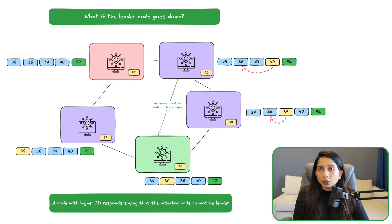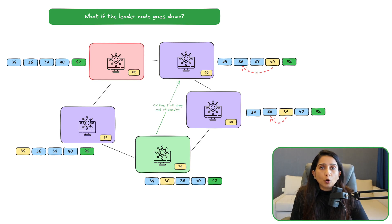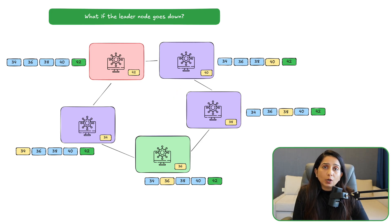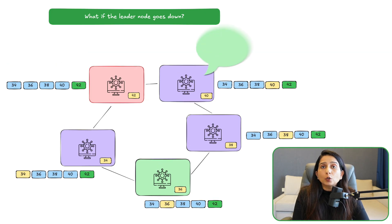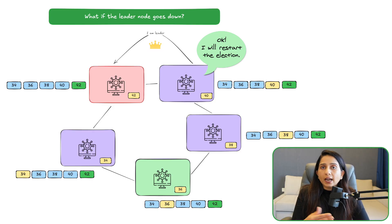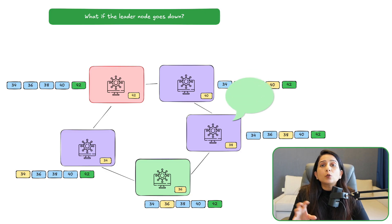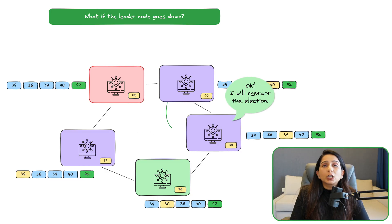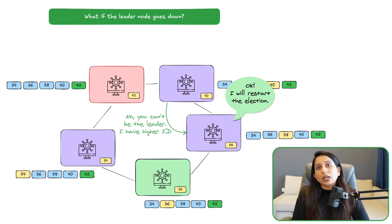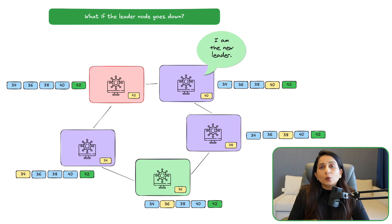Once node 36 receives a response from either 38 or 40 saying it cannot be the leader, node 36 drops out of the election. Whichever node stopped it — say node 40 — then restarts the election by sending messages to nodes with higher IDs than 40. Since no other node has a higher ID than 40, node 40 declares itself leader. Similarly, if node 38 had responded first, 38 would restart the election, send a message to 40, and 40 would again say no and become the leader.